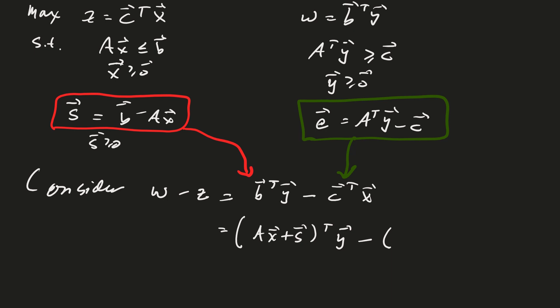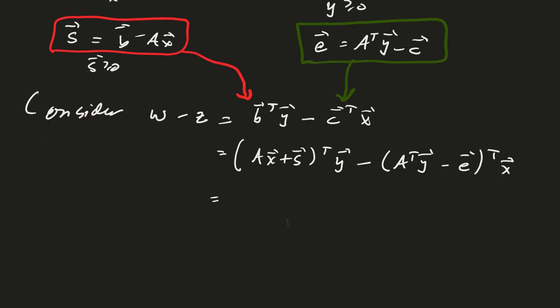Now let's see if I can work out a little bit of algebra. That's going to be x transpose A times A transpose y plus s transpose y minus big parentheses, that's going to be y transpose Ax.